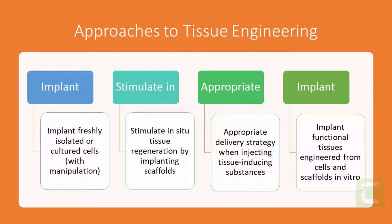The second strategy is to stimulate in-situ tissue regeneration by implanting scaffolds or injecting tissue-inducing substances at the injured tissue. This method requires purification of the tissue-inducing molecules, as well as selection of appropriate delivery methods, i.e., controlled delivery and soluble factors.